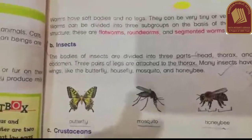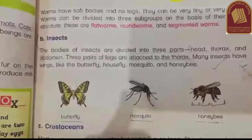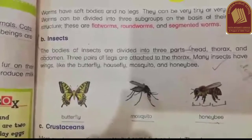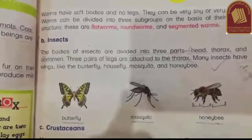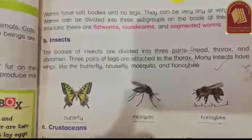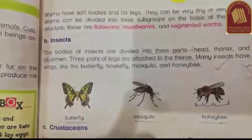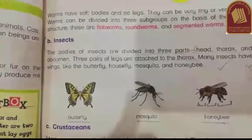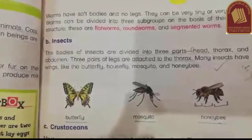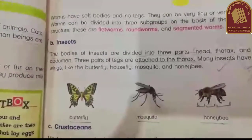The next subgroup is insects. We studied that the body of insects is divided into three parts: head, thorax, and abdomen. The thorax has three pairs of legs attached to it. Insects also have wings.